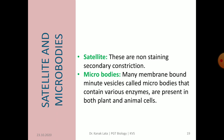The last topic of today's session is satellite and microbodies. Chromosomes may have additional constrictions other than primary constrictions — these additional constrictions are called secondary constrictions. The part of the chromosome beyond the secondary constriction is called a satellite, and these are non-staining. The chromosomes having a satellite are called SAT chromosomes. Microbodies are membrane-bound minute vesicles that contain various enzymes and are present in both plants and animals.